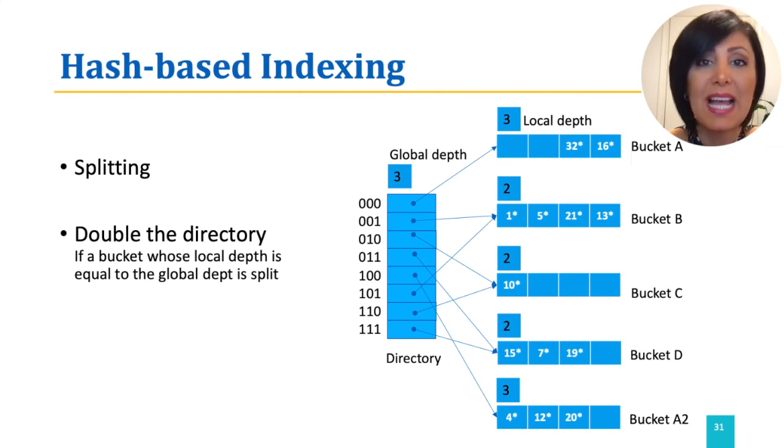This means that we need 3 bits to differentiate buckets. Note that many buckets will correspond to two of the directory elements, and therefore have 2 pointers. However, those that use the doubling of the directory, which are bucket A and A2, will use all the 3 bits to map to the right bucket.